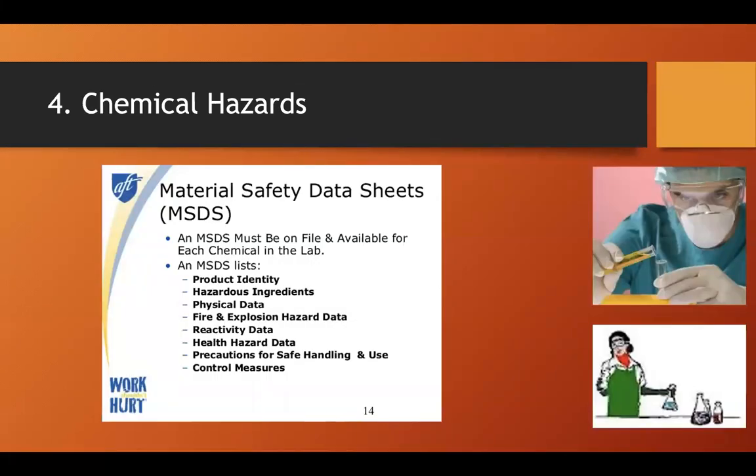Chemical hazards: there are many chemicals in the laboratory, and employees must be notified of their potential health hazards. This can be done by ensuring the MSDS — the Material Safety Data Sheet — is in the laboratory. It contains the product identity, hazardous ingredients, physical data, fire and explosion hazard, reactivity data, health hazard, precautions for safe handling and use, and control measures.